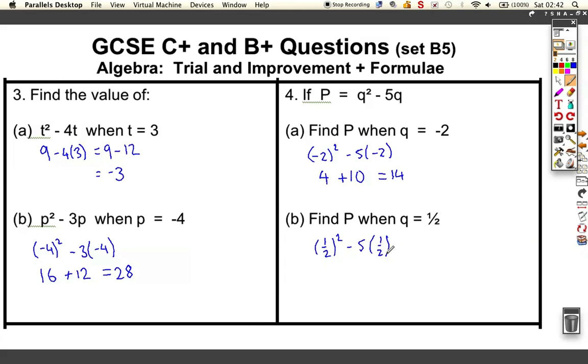Part b, this time we've got a fraction. Same idea: put the thing you want in brackets, then work out what's going on. Half times a half is a quarter, and then this time you're taking 5 times a half, which is -2.5. So we've got 0.25 and we're minusing 2.5, so that comes out as -2.25. Check you can do this without a calculator.